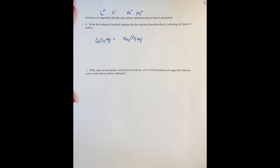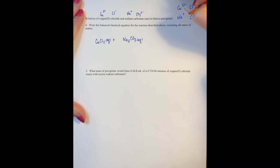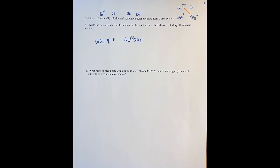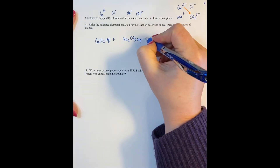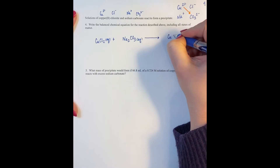Now we're told that a precipitate forms but we're not told the identity of the precipitate. So we have to determine what the precipitate is. That means I need to look at what happens when my ions change partners. I have my copper 2 plus ion, my chloride ion, my sodium cation, and my carbonate ion. When copper and carbonate are in the same solution, the chemical formula for the compound that results is going to be CuCO3.